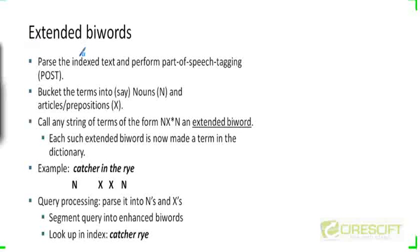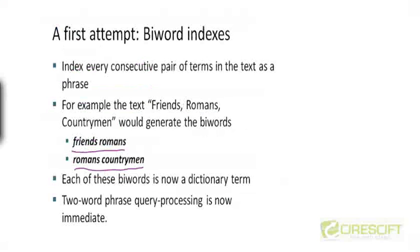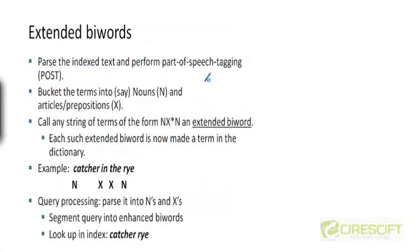Here's a slightly more complicated example of building a biword index. It turns out that most of the queries that users type into search engines are nouns. If most of the queries are nouns, there is no need to construct biwords from every pair of consecutive terms. Why not just focus on nouns and generate biwords only for the nouns in the documents? One problem with the biword index is that the index size will become huge. It may make sense to parse the documents and first perform what's called part-of-speech tagging.